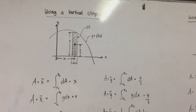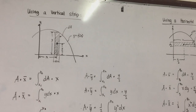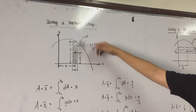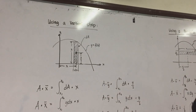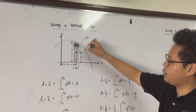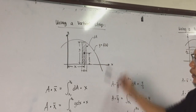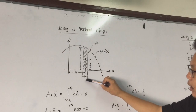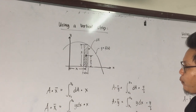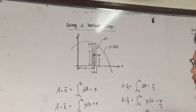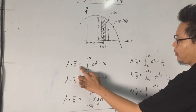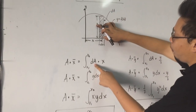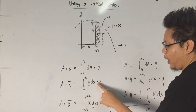Apart from using integration, we will have two orientations in finding our centroid — two types of differential strips: vertical and horizontal. For the vertical strip, we have dA with y as the height and dx as the width. Using the formula, area times bar x equals the integral of dA times x. Our dA is y times dx, so we get y times dx times x. The x here is the distance from the center of the differential strip to the y-axis. Since we have two variables, x and y, and our differential is in terms of dx, we substitute y with f(x) to integrate.